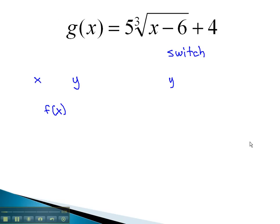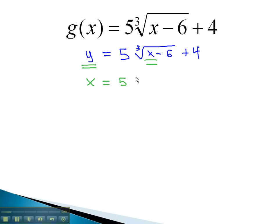So, if we have a function like g of x here, that g of x we could think about as y equals 5 times the cube root of x minus 6 plus 4. And then, in order to start finding the inverse, we need to switch any x and y values. In other words, the y becomes an x equals 5 times the cube root of x, which becomes a y, minus 6 plus 4.